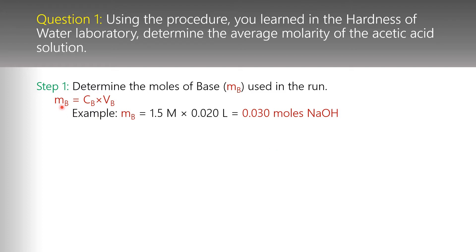Determining the moles of the base NaOH is fairly straightforward — it's just solving the molarity equation for moles. Molarity equals moles divided by volume, so multiplying both sides by volume gives us: moles = molarity × volume. For example, with a 1.5 molar solution of NaOH and 20 milliliters of base used, that gives us 0.030 moles of NaOH.